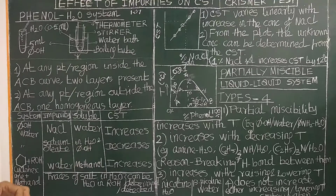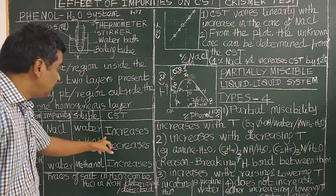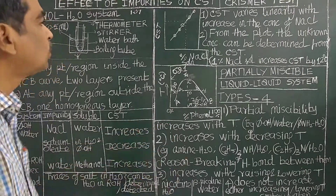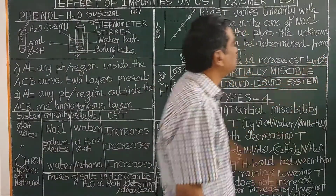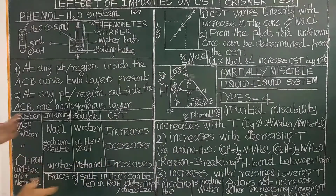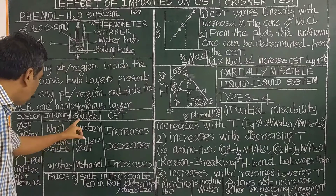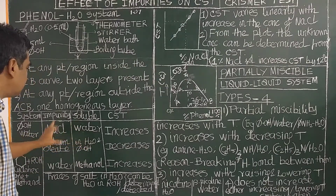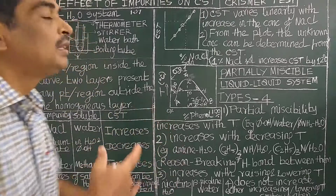Now let us see how the presence of impurity affects the critical solution temperature. For the phenol-water system, if the impurity present in water is sodium chloride, the presence of that impurity increases the critical solution temperature. In general, any substance or solute which is soluble in only one layer — not in both layers — will increase the critical solution temperature.